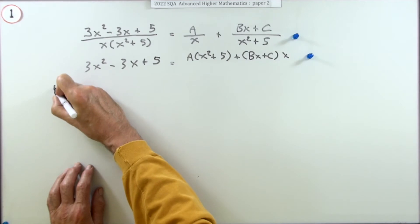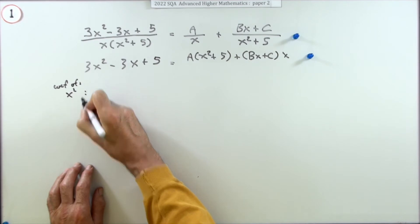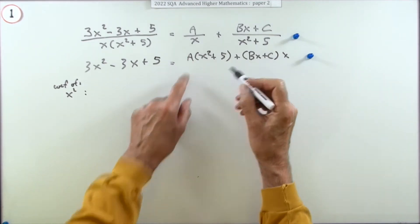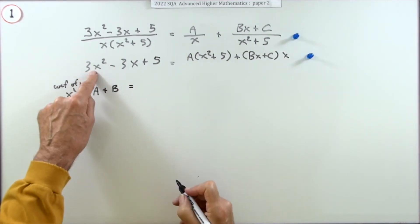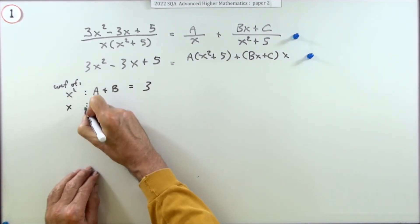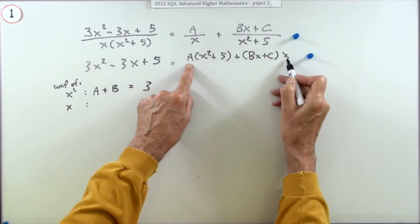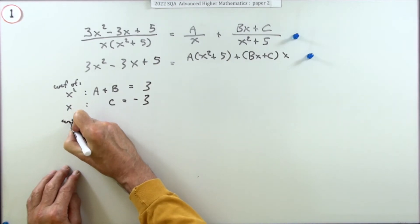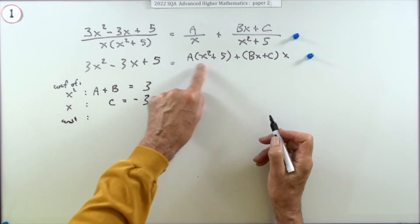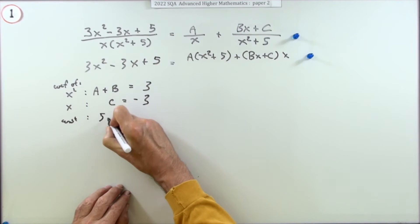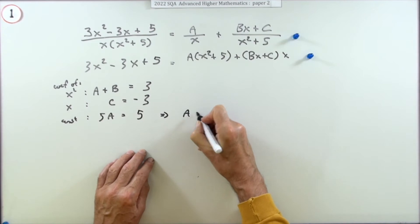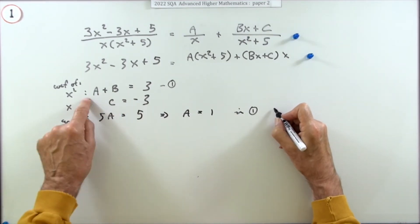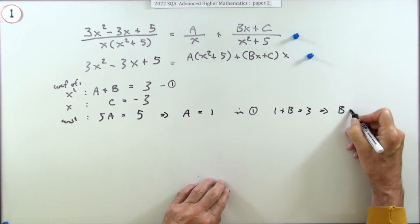Comparing corresponding coefficients means looking at each term. For x squared: A gives one set and Bx times x gives B, so the coefficient of x squared is A plus B, which equals 3. For x: only C produces an x term, so C equals negative 3 straight away. For the constant: 5A equals 5, so A equals 1. Going back to the x squared equation: 1 plus B equals 3, so B equals 2.